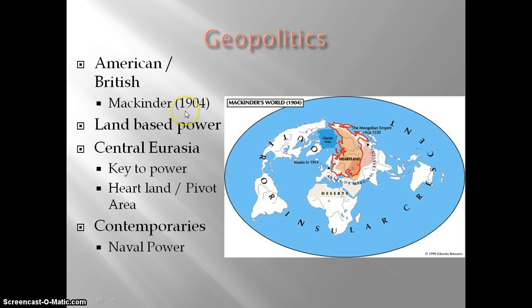You have to notice the year 1904 — he's thinking about military capabilities of the time, before airplanes were used in warfare. So clearly today that wouldn't necessarily hold up. But during his period it makes sense that a large land base that's very difficult to penetrate and provides large amounts of resources would be very difficult to defeat. This is somewhat different from his contemporaries, for whom naval domination was seen as the key — controlling trade routes and port cities.